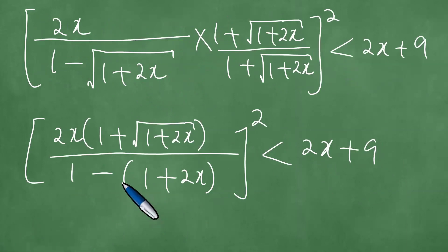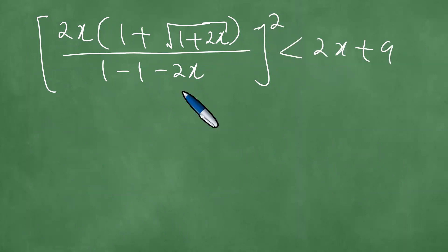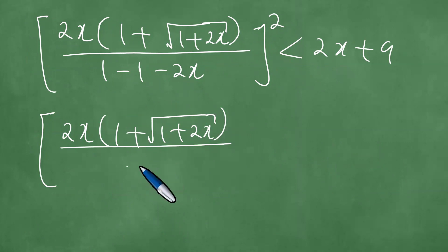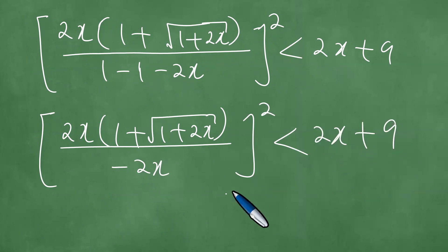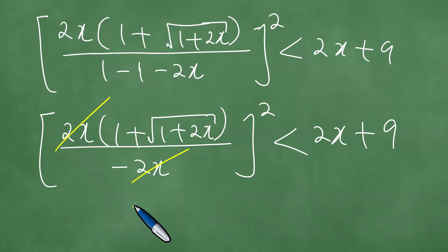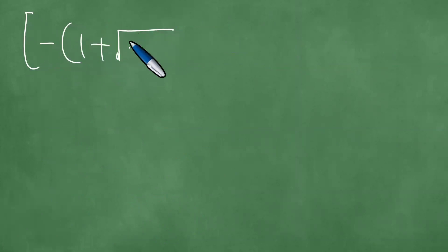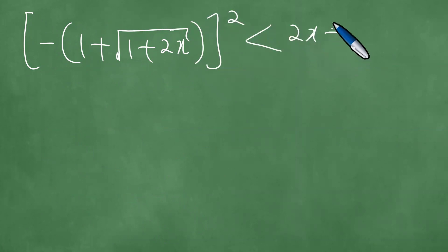Applying distribution in the denominator gives minus 1 minus 2x, and 1 minus 1 becomes 0, so we have 2x times 1 plus the square root of 1 plus 2x, over minus 2x. The cancellation law applies because 2x cancels, leaving minus times 1 plus the square root of 1 plus 2x, close bracket, squared, which is less than 2x plus 9.